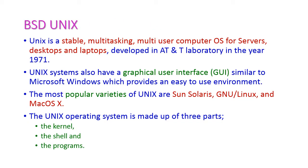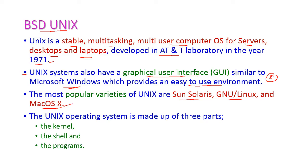The next most popular open source operating system is BSD Unix. Unix is a stable, multi-tasking and multi-user operating system for servers, desktops, and laptops, developed at AT&T laboratory in 1971. Unix also has a graphical user interface similar to Microsoft Windows, providing an easy-to-use environment. The most popular Unix variants are Sun Solaris, GNU Linux, and Mac OS X. Unix is made up of three parts: the kernel, shell programming, and Unix programs.